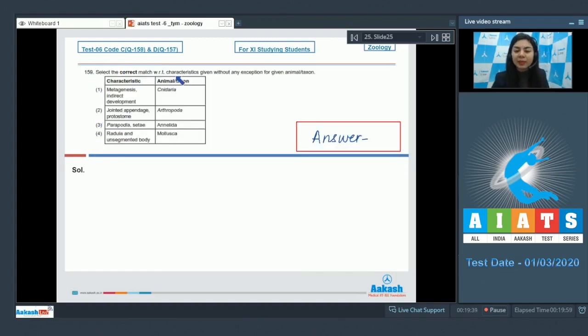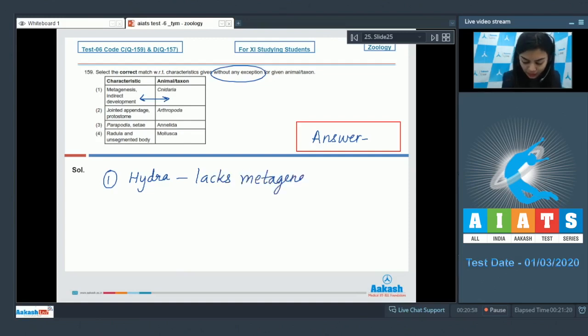Question 159: Select the correct match with respect to characteristics given without any exception for given animal or taxon. The characteristics are listed on the left hand side, the animal or the taxon on the other side. Let's go over them one by one. Option number 1: Metagenesis and indirect development corresponding to Cnidaria. This is true for most cnidarians, but it is not without any exception. Because hydra, which is a cnidarian, it lacks metagenesis, and it also shows direct development. So an exception lies. That is why it is not the right answer.